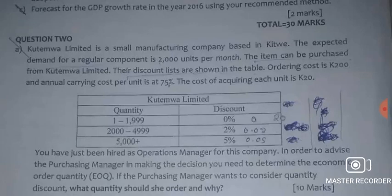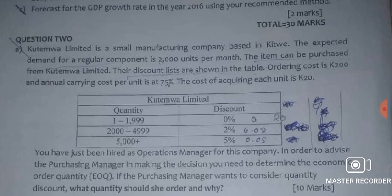In this video we are looking at a question on Economic Order Quantity with discounts. There are some rules that we follow which will be highlighted in this video. The question involves Kutemwa Limited, a small manufacturing company based in Kitwe. The expected demand for a regular component is 2000 units per month.